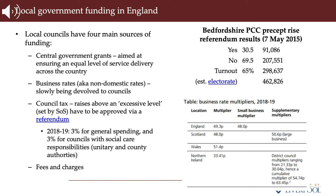Council tax is collected by billing authorities — the principal councils with district-level functions. There are 326 billing authorities: non-metropolitan district councils, unitary authorities, metropolitan borough councils, and London borough councils. County councils, city regions, and the London Assembly are not billing authorities. Precepting authorities such as parish councils then add their precept to the bill collected by billing authorities.